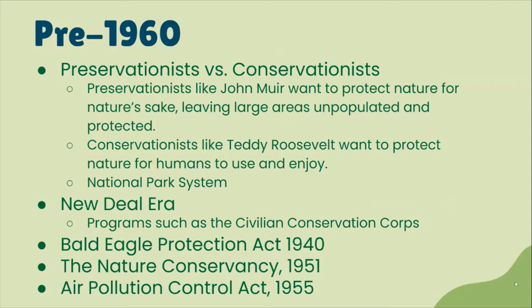This video is about environmental activism. Let's start with what was happening before 1960, before we consider the environmental movement to begin in the 1960s. We have the preservationists versus the conservationists. Preservationists like John Muir took beautiful photographs of Yosemite Valley and wanted to protect nature for nature's sake, leaving large areas of the country unpopulated.